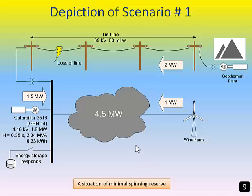In scenario one, the city is consuming four and a half megawatts. The wind farm is producing one megawatt. Two megawatts are being imported from the geothermal plant. As noted, only one diesel generator is online to save fuel. This scenario represents a situation of minimal spinning reserve. Before showing the time prediction, let's also introduce scenario two.